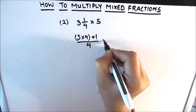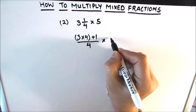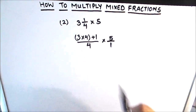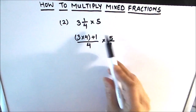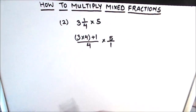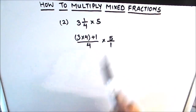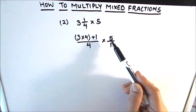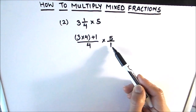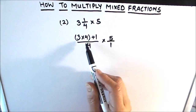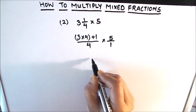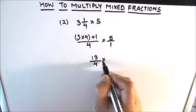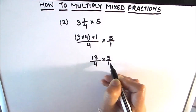The whole number 5 can be written as 5 upon 1 as a fraction. Since we are multiplying with a fraction, we write the whole number as a fraction so there's no confusion about where to place it — 5 goes in the numerator and 1 in the denominator. So 3 times 4 is 12, and 12 plus 1 is 13, giving us 13 divided by 4, times 5 divided by 1.